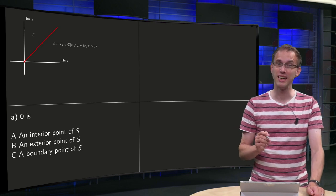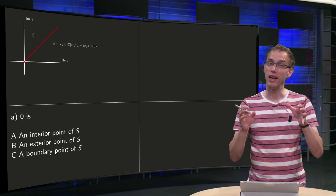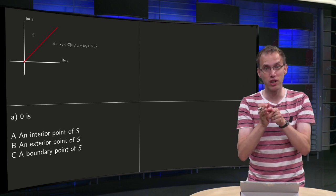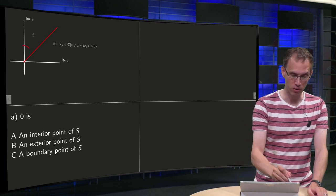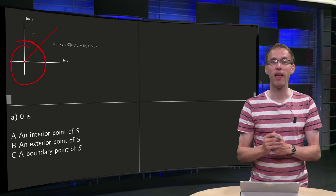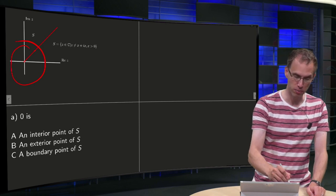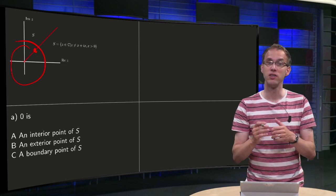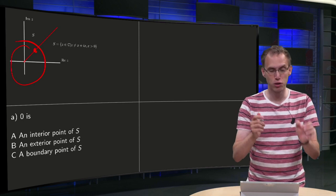Is the origin an interior point of S? If you have an interior point, you should be able to draw a disk around it containing only points of S. So let's try to draw a disk around the origin — do we have only points of S? No, for example this point here is on the line and is in the complement of S. So this disk does not contain only points of S; let's try it with a smaller disk.